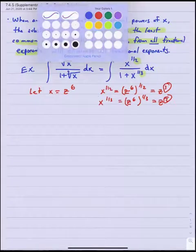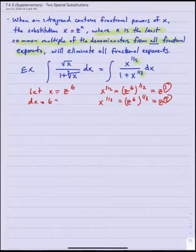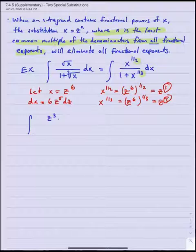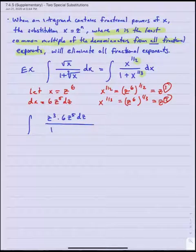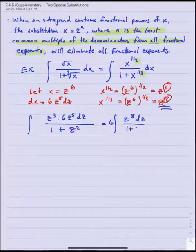Let's follow through on this example. Don't forget we still need our dx as well, which in this case would be 6z to the fifth dz. So our integral becomes square root of x, which is z cubed, times dx which is 6z to the fifth dz, over 1 plus x to the 1/3 which was z squared. That gives me 6z to the eighth dz over 1 plus z squared.